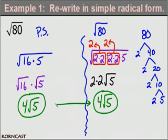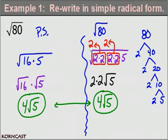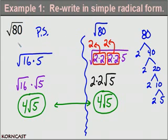The nice thing about simplifying radicals is that it doesn't matter which process you use. Some may prefer the factor tree method over the perfect squares method, or vice versa. However, sometimes it's good to use both methods, so please make note of both. Hopefully it will make your simplification process a little bit easier.